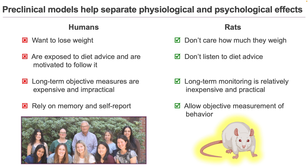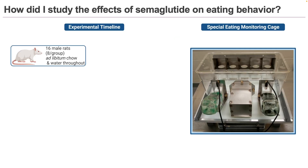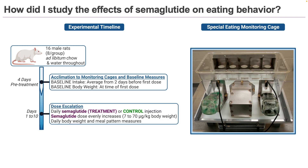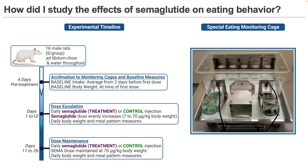Since I was interested in the physiologically driven changes in behavior that make semaglutide effective, and there's very little research using preclinical models that copies the dosing used in humans, I used rats. I used specialized cages that let me monitor when, how much, how long, and at what rate the rats eat. I let them get used to the cages, and then I started treating them with either semaglutide or a control injection. Just like humans, I started them with a really small dose and increased the dose over a long period of time to my maximum dose, which I continued for a long time, keeping them in the specialized cages throughout the experiment.